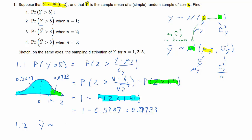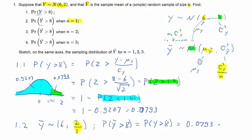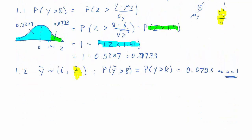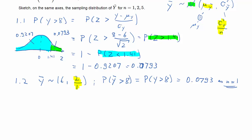Let's go to the second question. Now we are dealing with ȳ. We want a probability for ȳ, so we need the distribution of ȳ. If the sample size is 1, the variance of ȳ is just 2, so ȳ has exactly the same distribution as Y itself. Therefore the probability that ȳ is larger than 8 is the same as the probability that Y is larger than 8, which we just calculated as 0.0793.